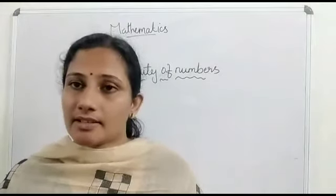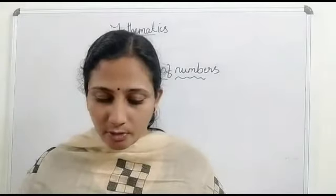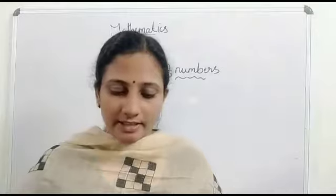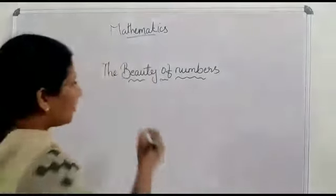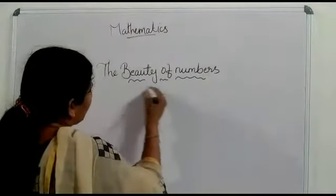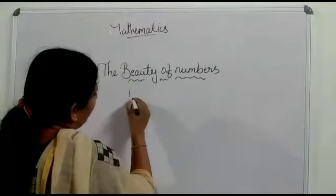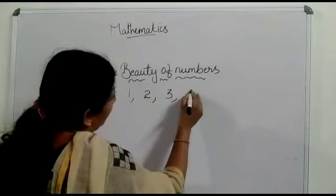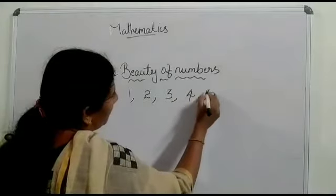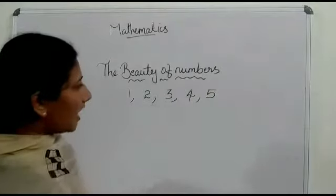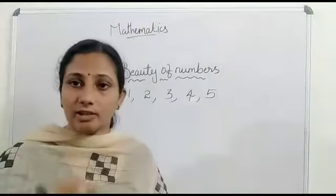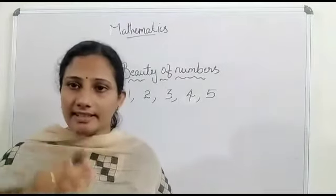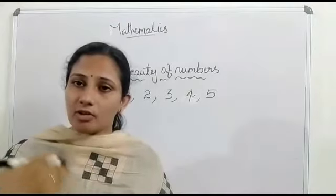Then, what do you mean by consecutive numbers? 1 to 5 consecutive numbers. Using three consecutive digits from 1 to 5. Consecutive digits means what? 1, 2, 3, 4, 5. These are consecutive digits.